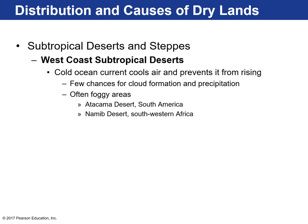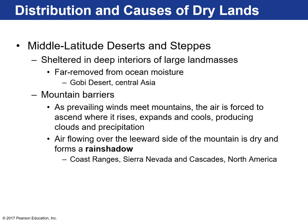There are also deserts as a result of ocean circulation. West coast subtropical deserts form because cold ocean currents from higher latitudes move southward or northward, cooling the air above and preventing it from rising, leaving little cloud formation and precipitation. These are often very foggy areas, like the very dry Atacama Desert in South America and the Namib Desert in southwest Africa. Both places are on the west coast of a continent and have very cold water traveling along their coastline, which really dries up the landscape.